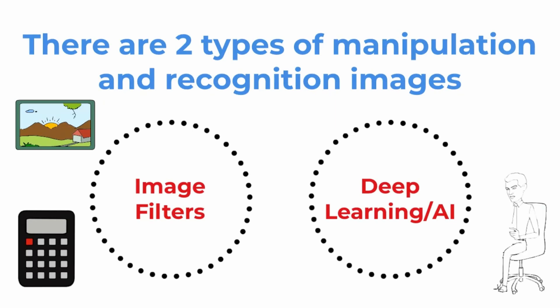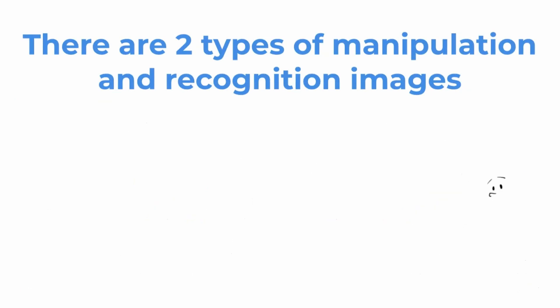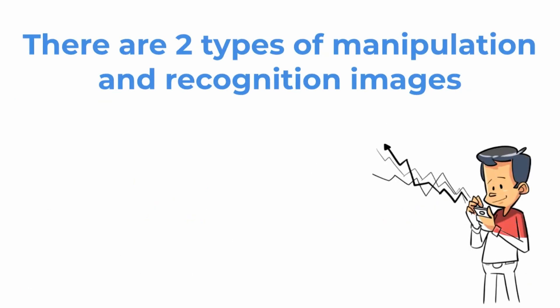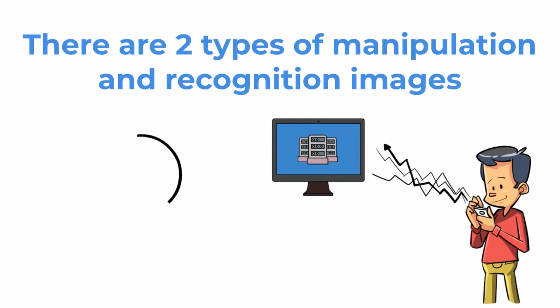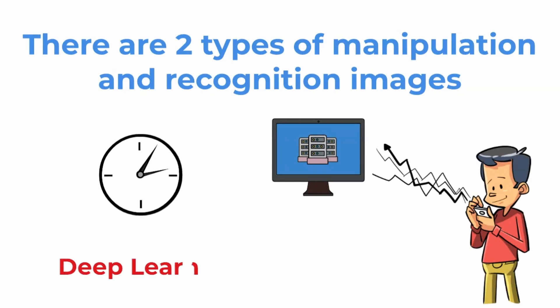Deep learning AI is image recognition and manipulation based on AI. It's based mostly on unsupervised learning, which means the AI may learn how to identify an object based on many images that show that object. Combining these two methods gives really nice effects. Image manipulation can prepare a base for AI analysis or show some obvious inconsistencies. Deep learning is great; however, it takes a lot of processing power, time, and needs a database to learn. It's also important to have similar conditions for deep learning.